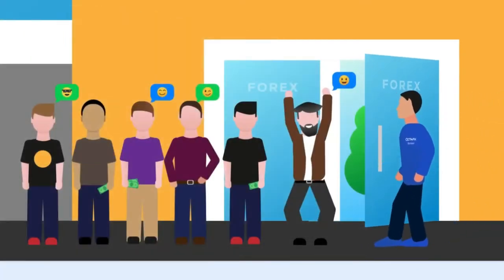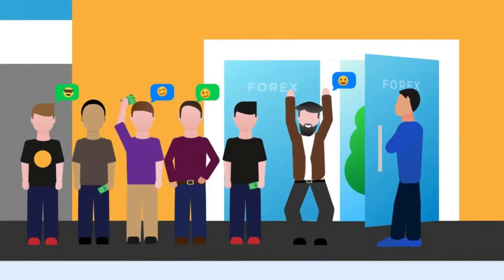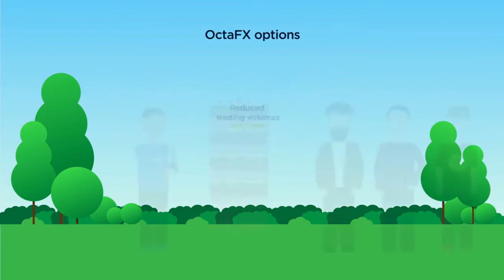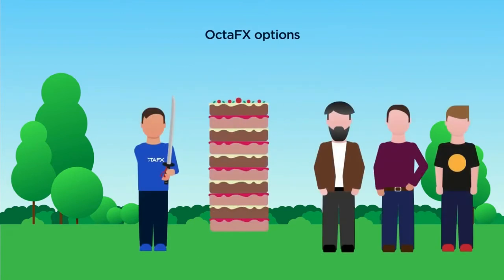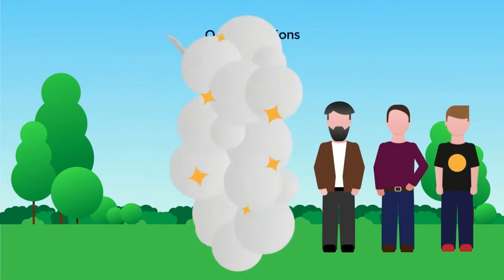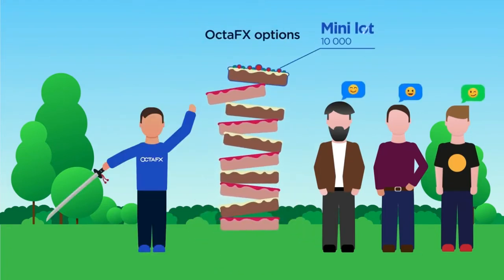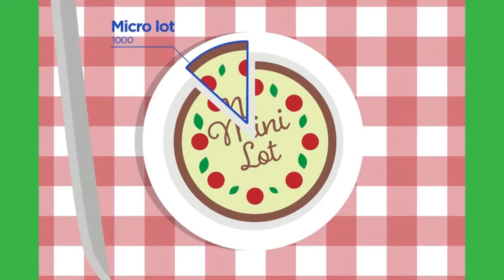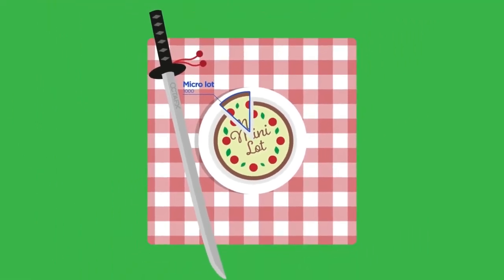Brokers opened the doors of the Forex market to all comers. OctaFX Broker makes Forex accessible by offering two significant options. The first is reduced trading volumes: mini lot and micro lot. OctaFX splits a lot like a pie. So, if a lot equals 100,000 units of a base currency, a mini lot equals 10,000 units, and a micro lot is 1,000 units. This way, you can trade smaller amounts.